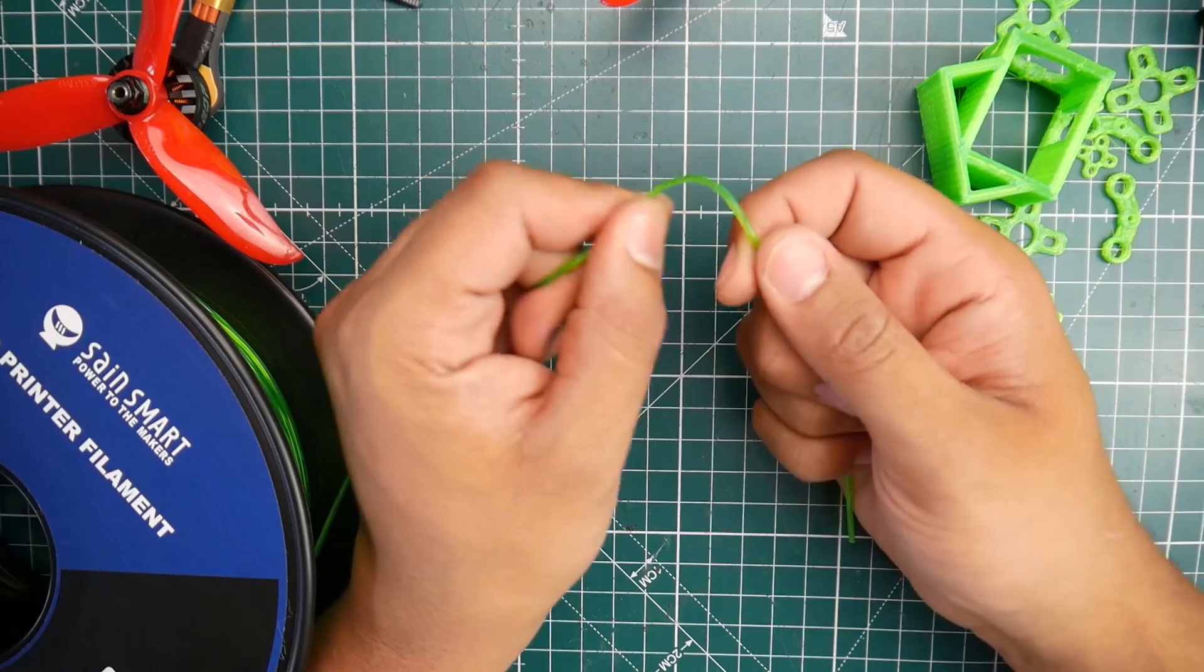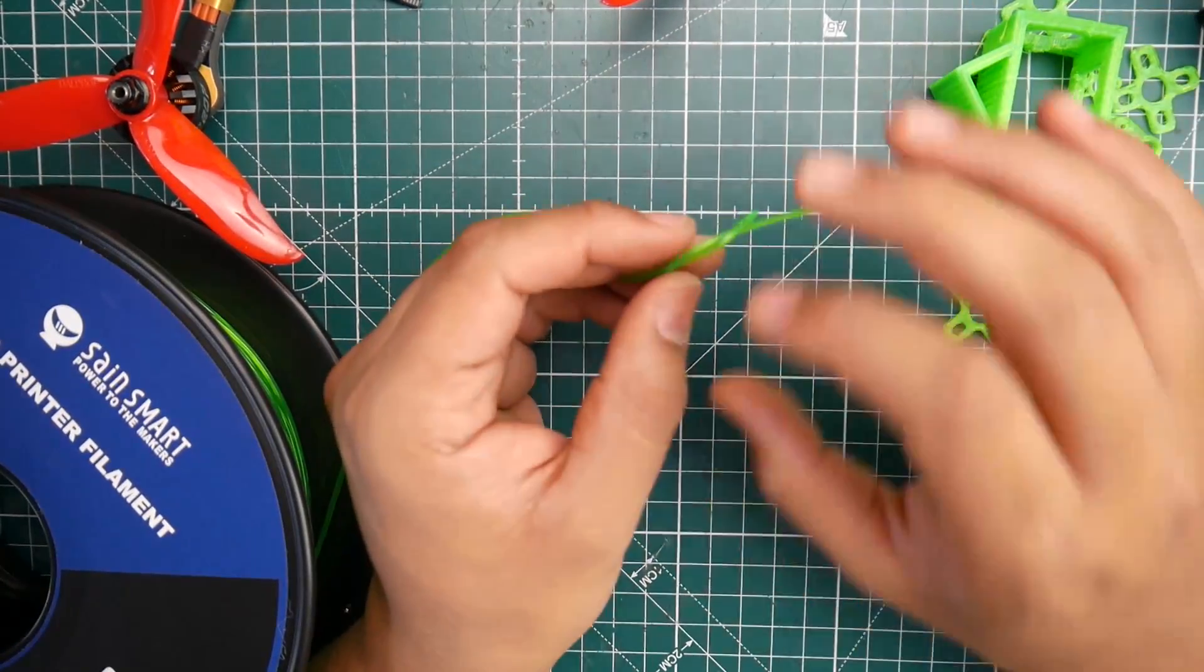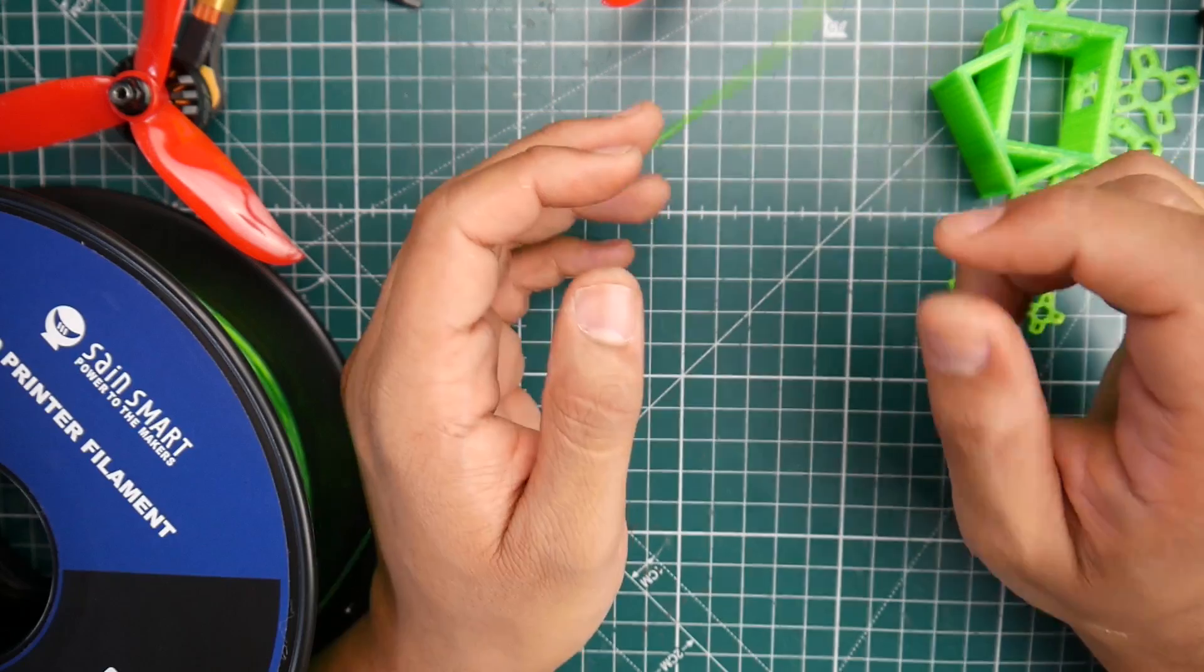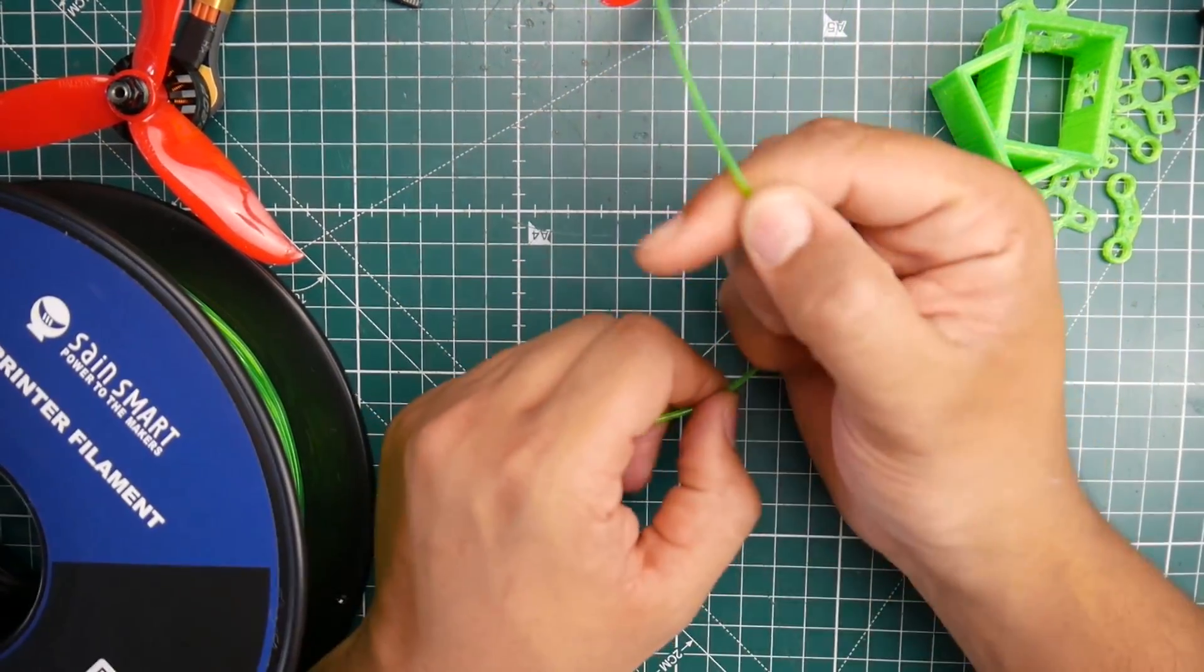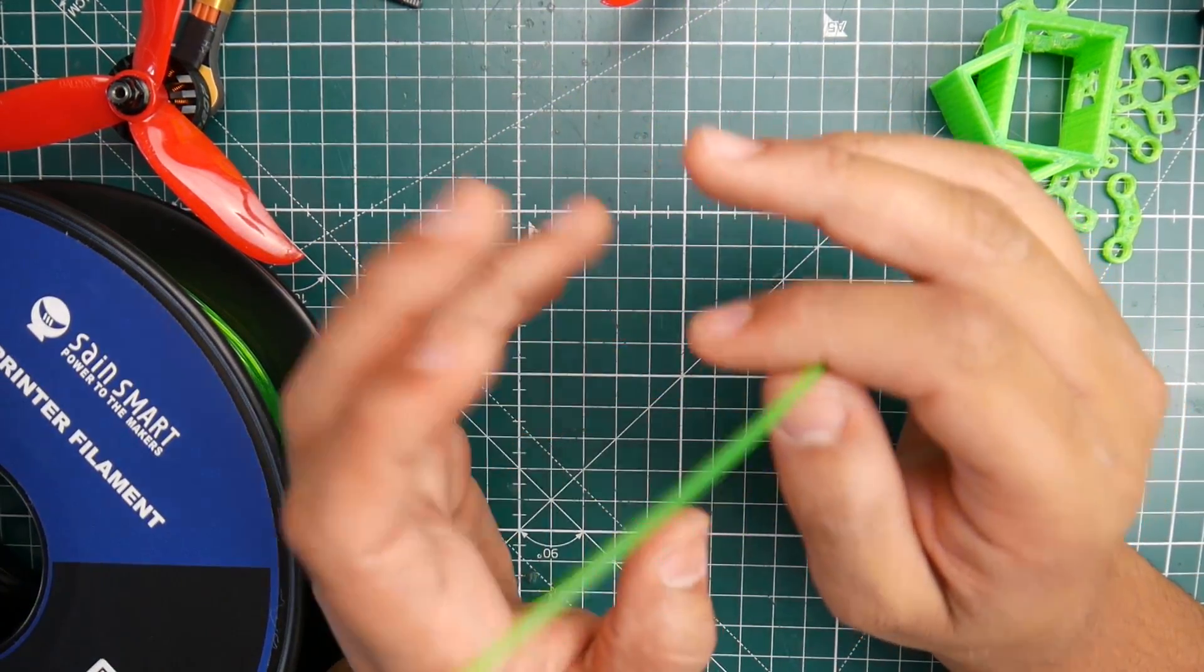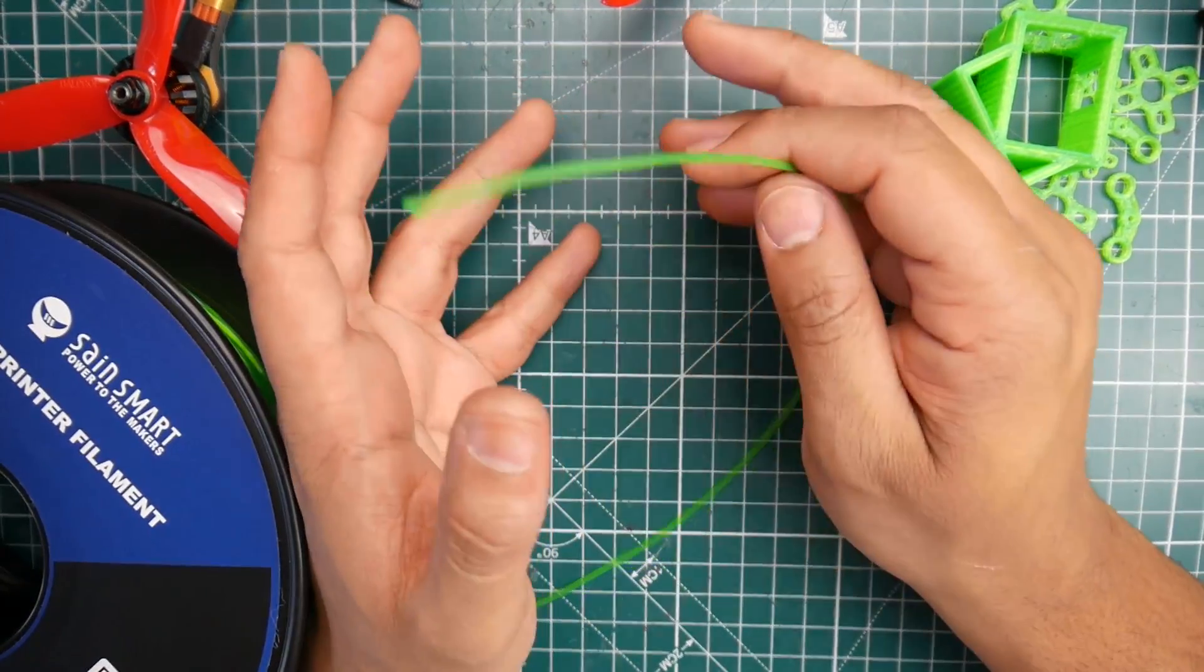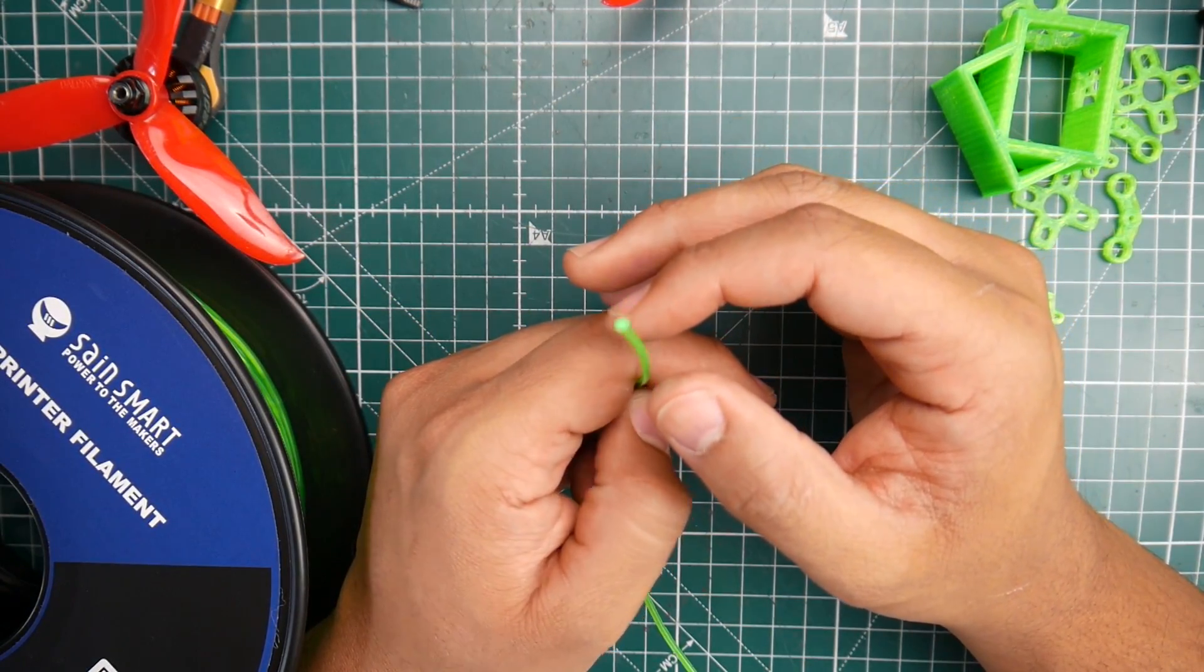However, this is the new stuff. It's from SainSmart and it's TPU 95A also, as you can tell right here. Very strong material. The only difference that you will be able to notice immediately is that this is see-through and that was not. However, another thing is when you touch it, this feels plasticky while the other one feels like silicone.